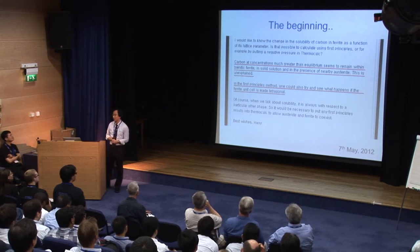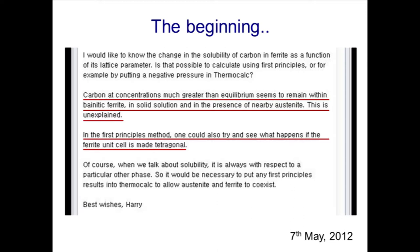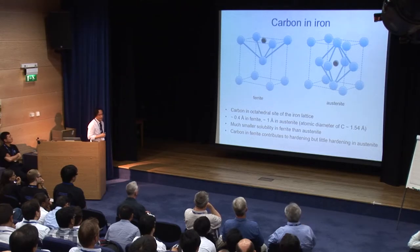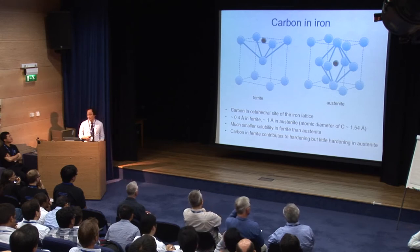All things started with this short email from Harry, which he sent around one year ago. He asked me why I keep all the emails I receive — at that time I did not say anything, but now I think he can understand the reason. He wrote that there is excessive carbon in the bainitic ferrite which is reluctant to be partitioned into the adjacent austenite, and he suggested seeing what happens if the ferrite has non-cubicity.